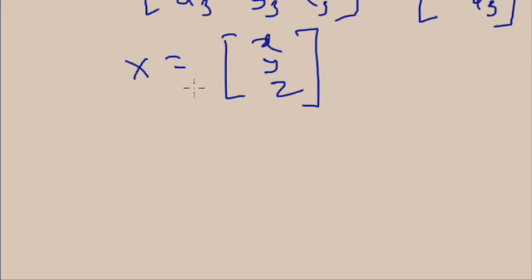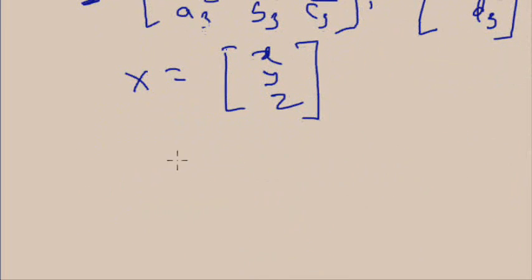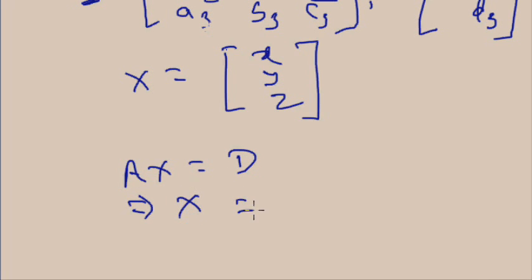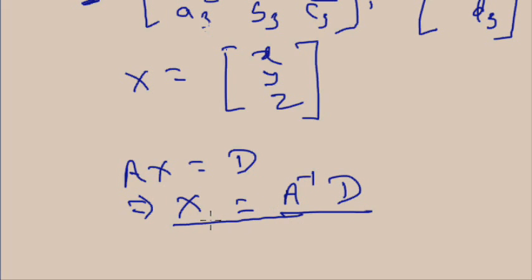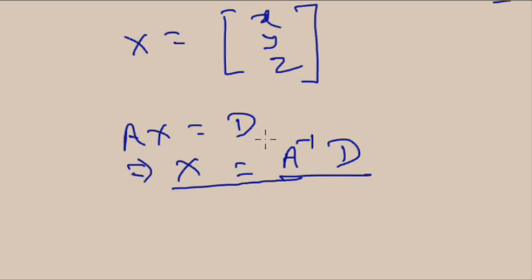This system of equations can be represented as AX = D. From this, X equals A inverse times D. You have to remember this formula — to calculate the values of the variables, you multiply A inverse by the D matrix.